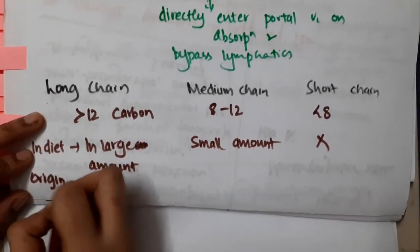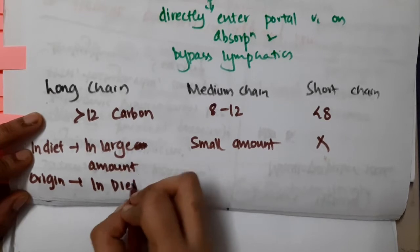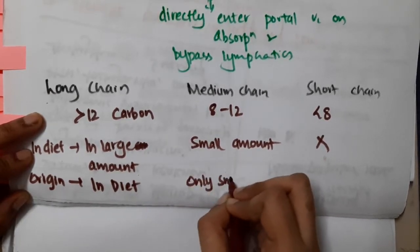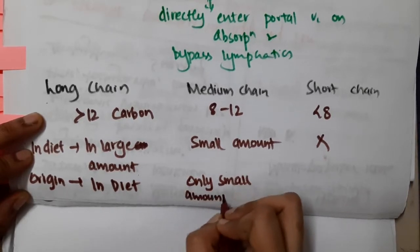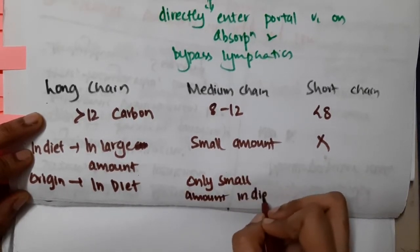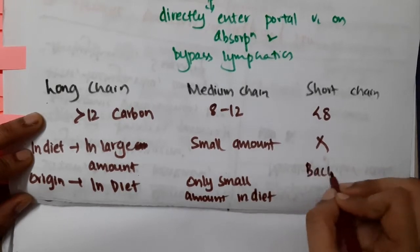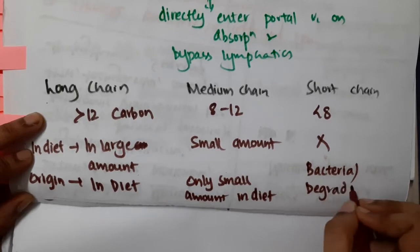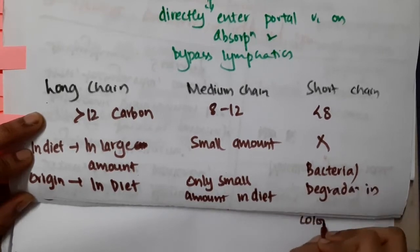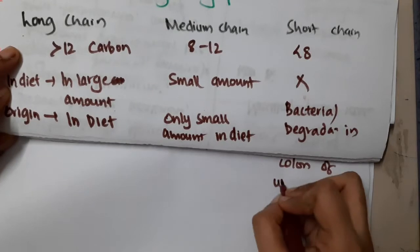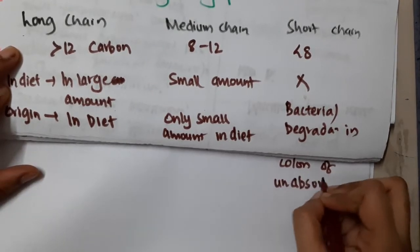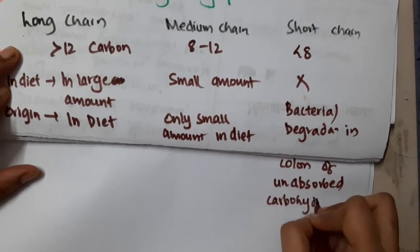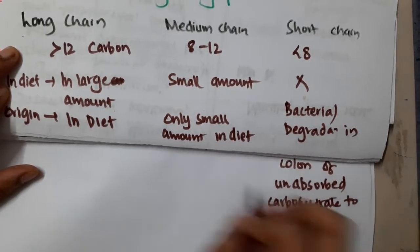If you see the origin, long chain fatty acids are present in the diet, and medium chain fatty acids are present in only small amounts in the diet. Short chain fatty acids are obtained by bacterial degradation — in the colon, bacteria degrade unabsorbed carbohydrates into short chain fatty acids.